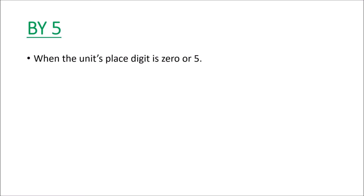Any number is divisible by 5 when the units digit is 0 or 5. For example, a number with 0 in the units place is divisible by 5, and a number with 5 at the units place is also divisible by 5. So for divisibility by 5, we check the units digit — if it is 0 or 5, the number is divisible by 5.